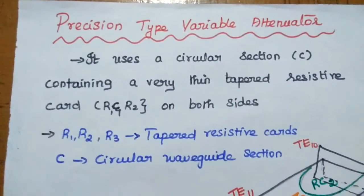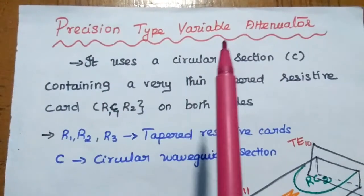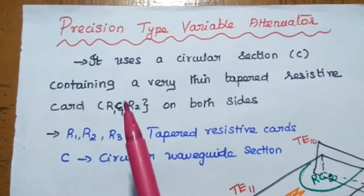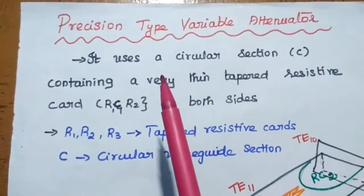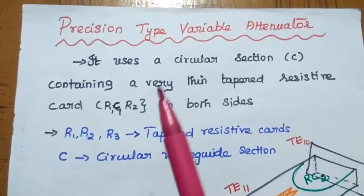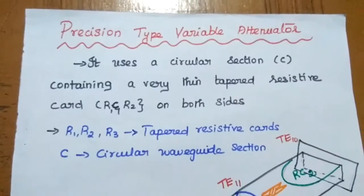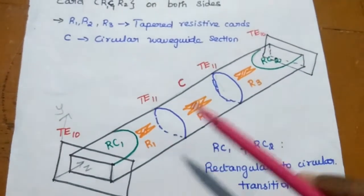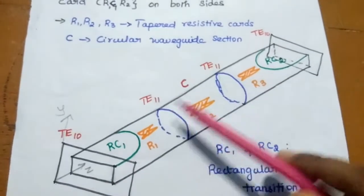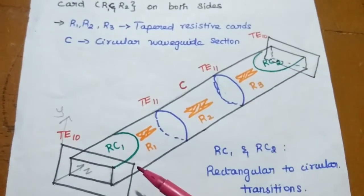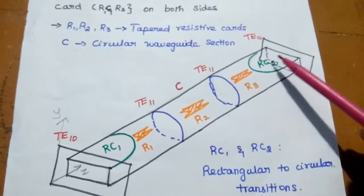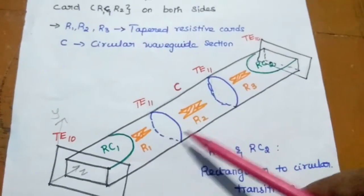Next is the precision type variable attenuator. In this precision type, the attenuation can be varied based on the application. We use a circular waveguide section containing very thin tapered resistive cards R1 and R2 at both ends. At each side there is a rectangular-to-circular transition, and in between these two transitions we have only the circular section.